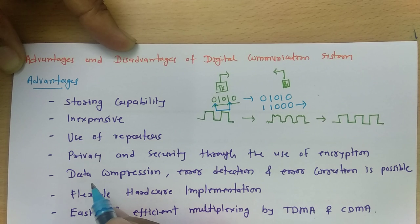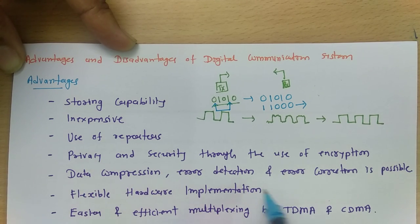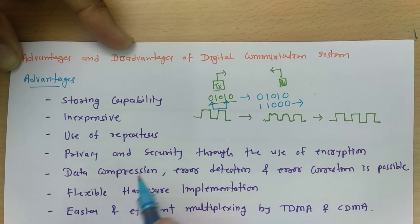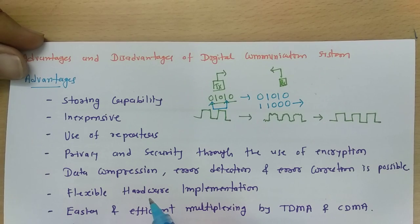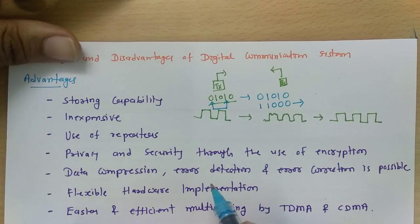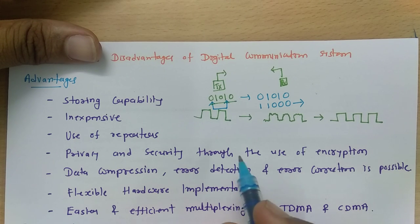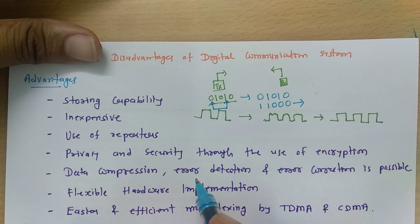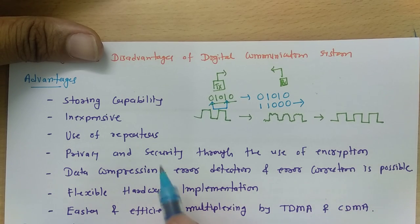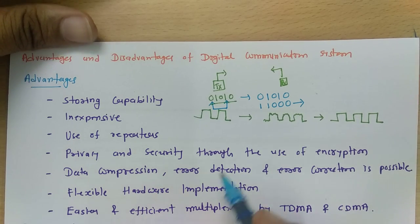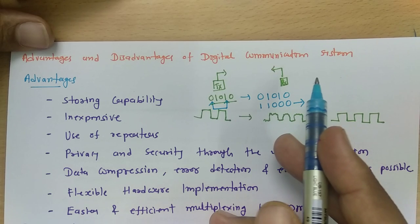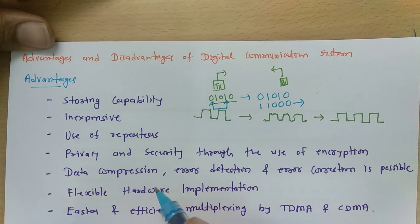Another advantage is that in digital communication systems, data compression, error detection, and error correction are all possible. If you receive data with added noise, error detection and correction can be applied at the receiver side. These capabilities are not possible in analog communication systems, making this a very significant advantage.